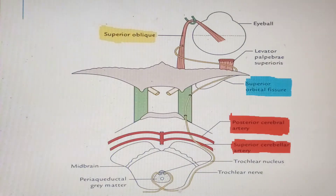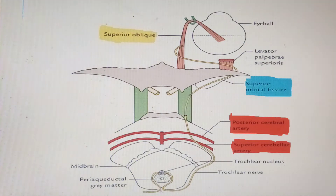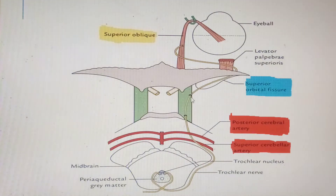Because the trochlear nerve winds around and emerges dorsally from the posterior aspect of the brainstem — unlike the third nerve which exits ventrally — it has to wind all the way around to eventually reach the middle cranial fossa and then the orbit to supply the eye.